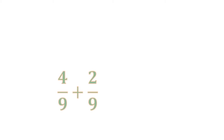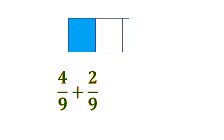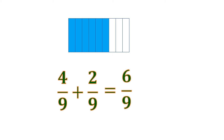Another example: we have 4 ninths plus 2 ninths. Let us visualize 4 ninths — we have 4 shaded parts out of 9. And we want to add 2 ninths, or 2 shaded parts out of 9. All in all, it is 6 ninths, or 6 shaded parts out of 9.